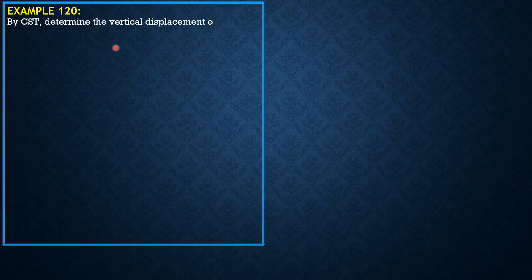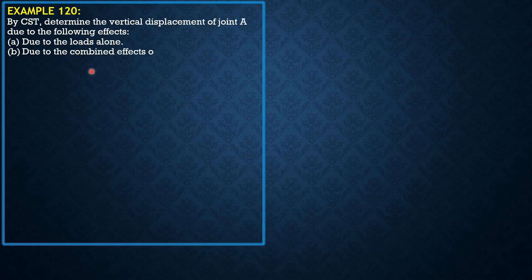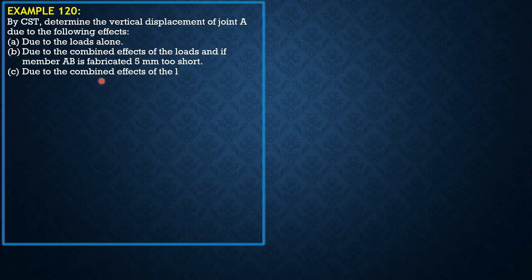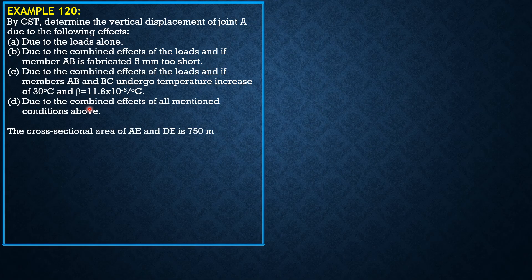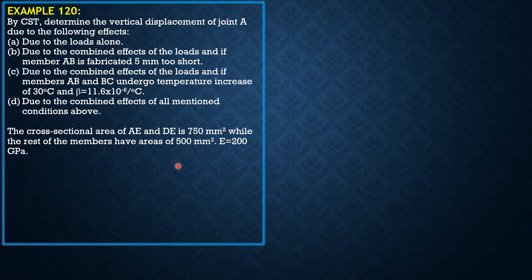By Castigliano's second theorem, determine the vertical displacement of joint A due to: (A) the loads alone; (B) the combined effects of the loads and if member AB is fabricated 5mm too short; (C) the combined effects of the loads and if members AB and BC undergo a temperature increase of 30 degrees Celsius, where beta is 11.6 × 10⁻⁶ per degree Celsius; and (D) the combined effects of all mentioned conditions. The cross-sectional area of AE and DE is 750mm², the rest are 500mm². Modulus of elasticity is 200 GPa.